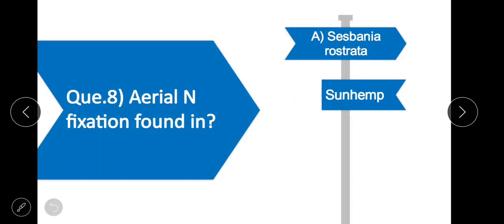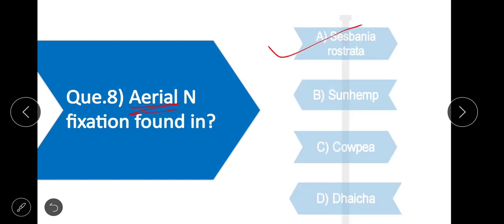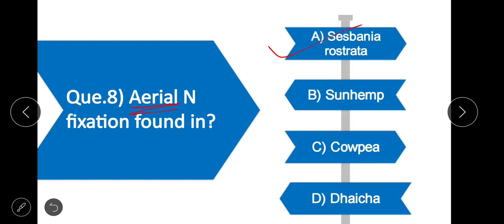Question 8: Aerial nitrogen fixation is found in — option A is correct — Sesbania rostrata. In Sesbania rostrata, nitrogen fixation takes place through both the stem and root.